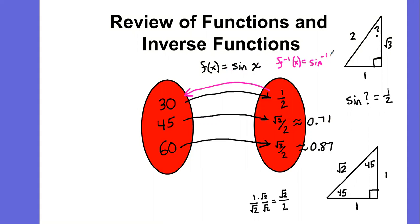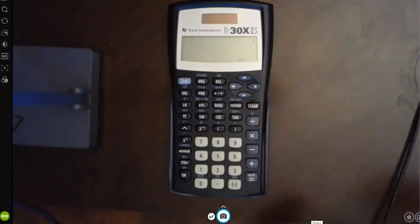Whenever they notate this, you're going to see this little negative 1 here. That is not an exponent. That is meant to be the inverse of sine, inverse sine of x. If I do the inverse sine of 1 half, that should give me 30. Let's see that happen with my calculator.